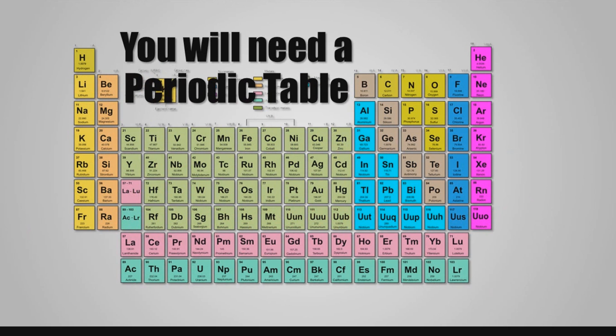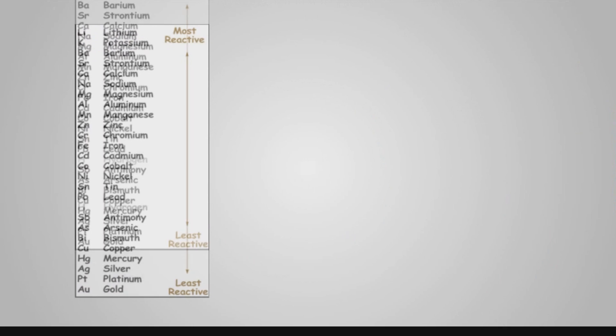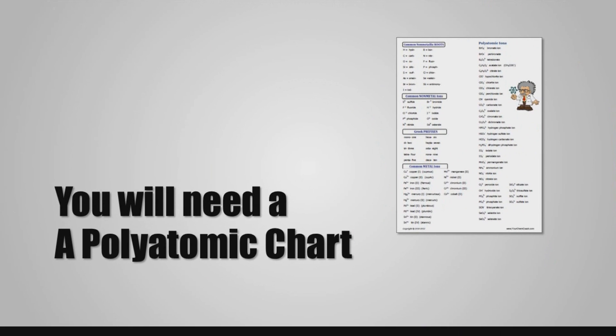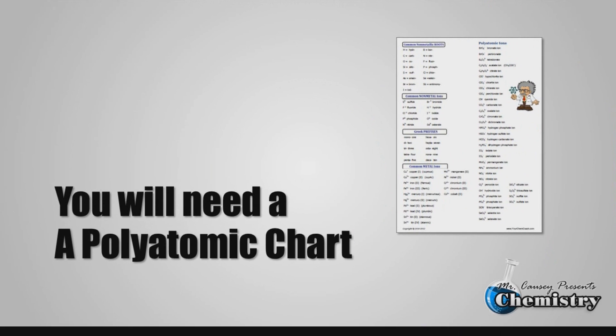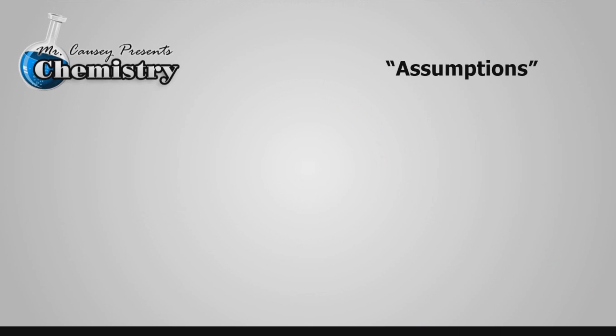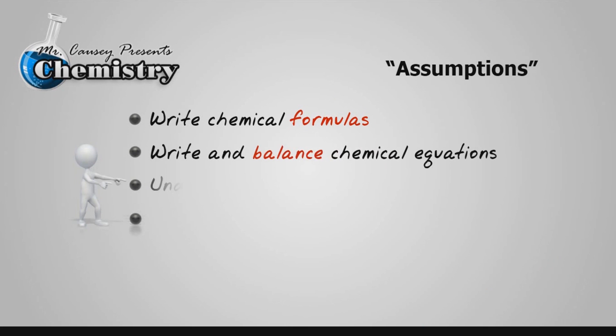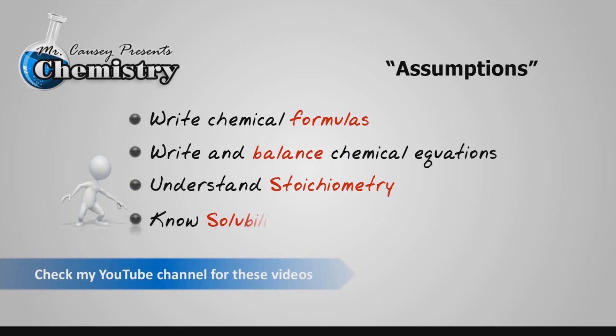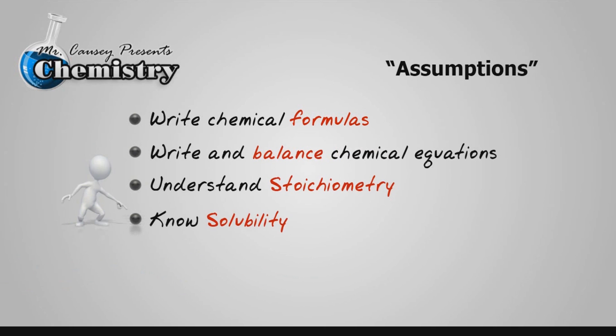You will need a periodic table, an activity series chart, and a polyatomic ion chart. The assumptions I'm going to make is that you can write chemical formulas, you know how to write and balance chemical equations, you understand stoichiometry, and you know solubility. And of course, if you don't understand all of these completely, there are videos on my channel on each of these topics.